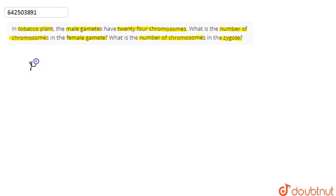We are given here that in the tobacco plant, the number of chromosomes in the male gamete are basically 24. So the female gamete will also have the same chromosome number because in case of sexual reproduction...